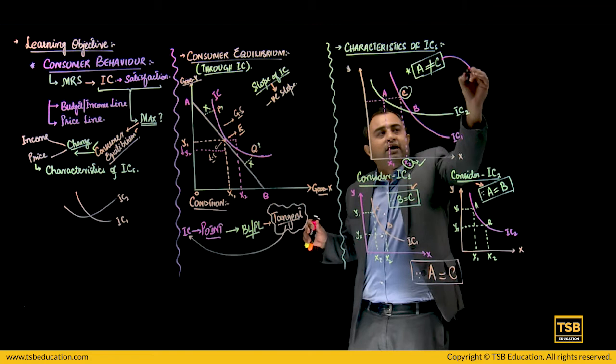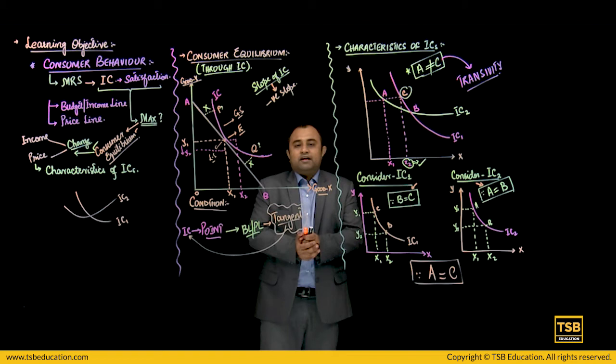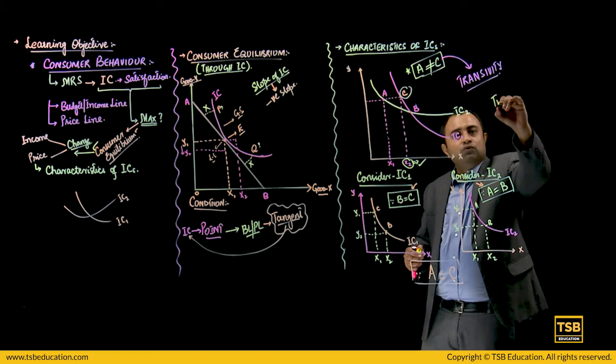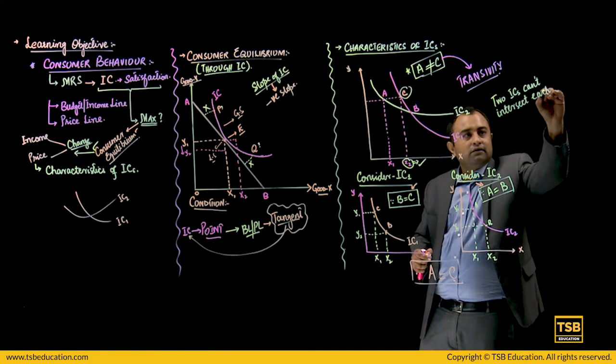और यह a is not equal to c जो है वो कहलाता है due to the property of transitivity. T-R-A-N-S-I-V-I-T-Y. इस तरह यह indifference curve की characteristics इखत्म हुई. और finally इस basis पे हम यह कह सकते हैं, a final verdict के, two ICs cannot intersect each other.